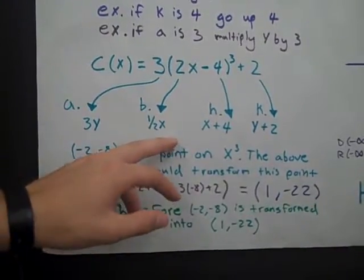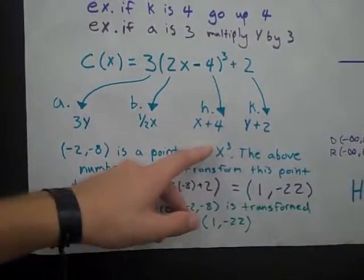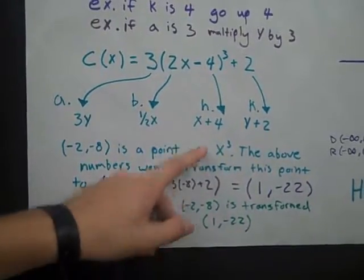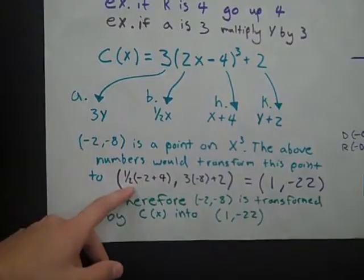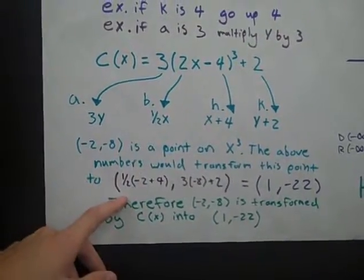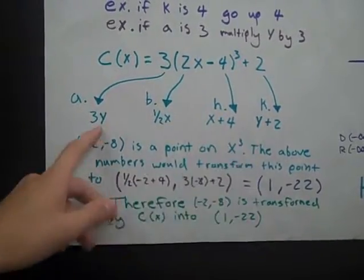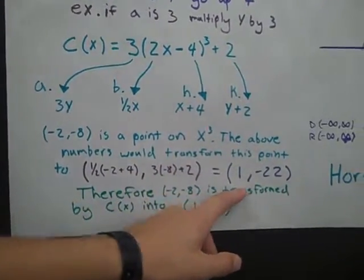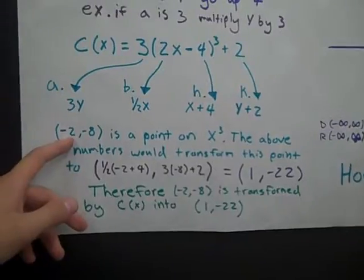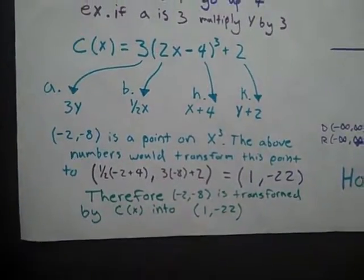When you're working with the inside of the parentheses, which is the h, you do opposite of the order of operations. So you do the x plus h first, and then you would multiply it by one half. Then you do as it says. So it's 3 times negative 8, and then plus 2. That's how you would transform the point (-2, -8) into (1, -22).